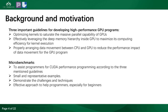Based on the NVIDIA architecture and the complexity of GPU heterogeneous memory architecture, three guidelines for developing high-performance CUDA programs are important. First, GPU kernels should be optimized to saturate the massive parallel capability of GPUs. Second, the deep memory hierarchy inside the GPU should be effectively leveraged. Third, memory management and data movement between CPU and GPU memory should be properly arranged. Microbenchmarks are small and representative examples — we believe using them to demonstrate challenges and techniques is an effective method to help programmers, especially beginners.